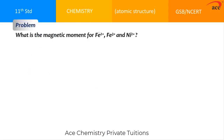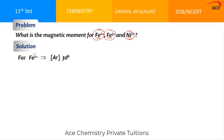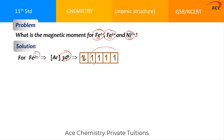Let us find the magnetic moment of Fe²⁺, Fe³⁺, and Ni²⁺. For Fe²⁺, the configuration is 3d⁶. The 3d subshell consists of five orbitals. When you fill in the electrons and find the number of unpaired electrons, it comes to 4. So n = 4. Substituting into the formula: μ = √(4 × 6) = √24, which is approximately 5 Bohr magnetons.